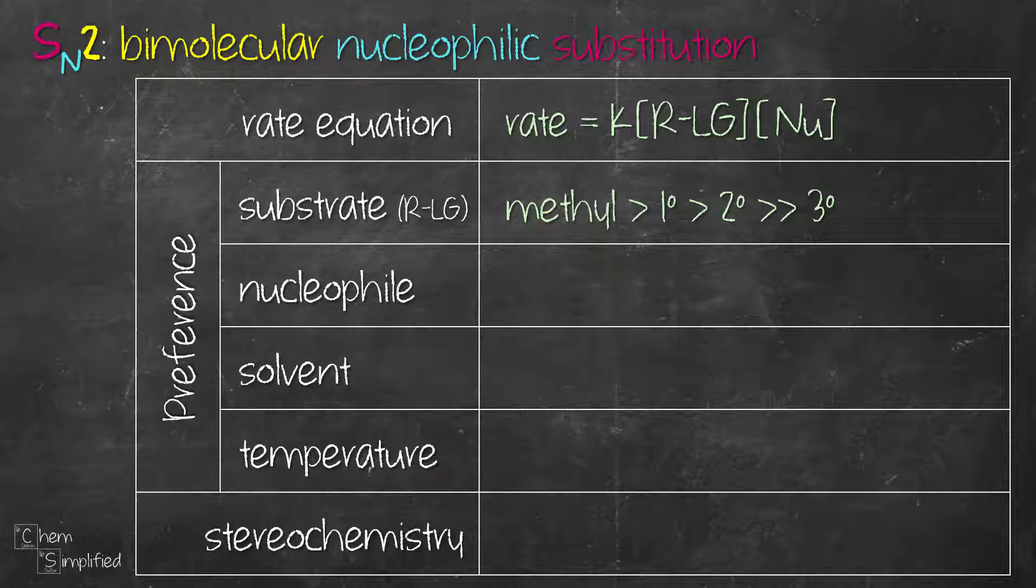As for the nucleophile, the strong ones are going to favor SN2. They are generally anions like hydroxide ion, alkoxide, and cyanide ion.